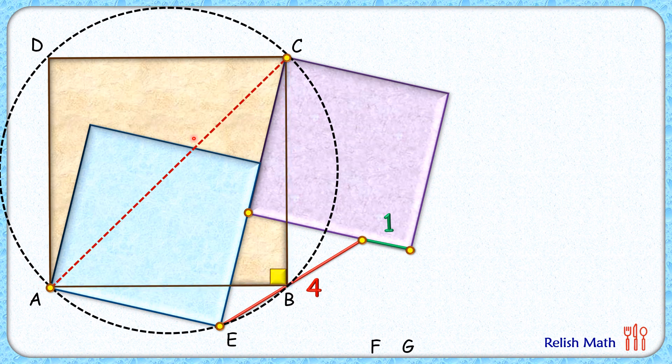Thus, AC is the diameter of the circle. We know that any point which is obtaining an angle of 90 degrees with the diameter lies on the circumference. Here, point E is obtaining the same angle of 90 degrees, so point E will lie on the circle.